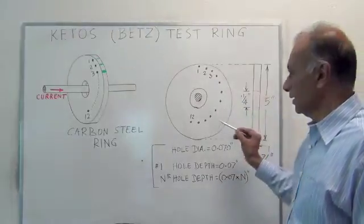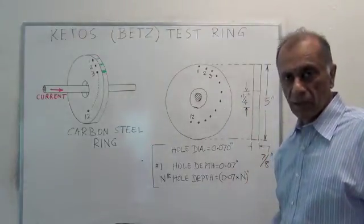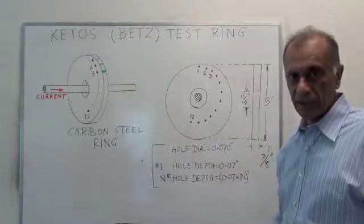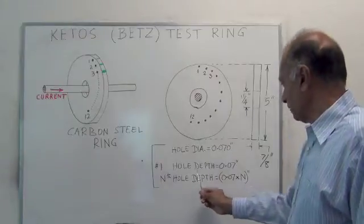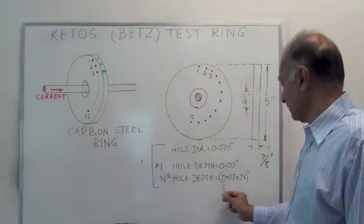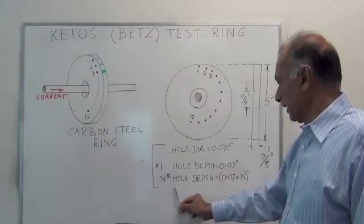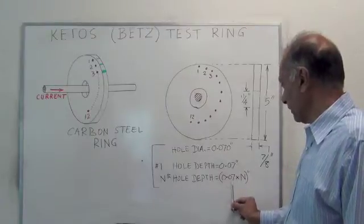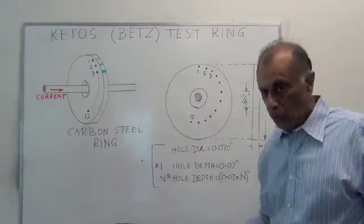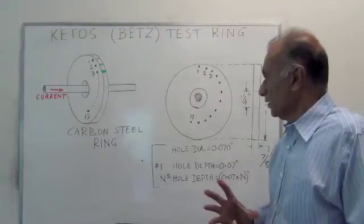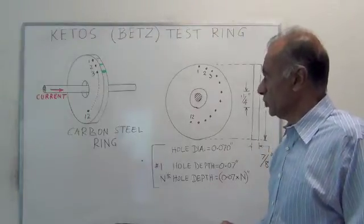Here is a diagram of the Ketose ring. It has 12 holes. The diameter of each hole is 0.070 inches, and the depth of the first hole is 0.07 inches. Then the depth increases every 0.07 for each hole.